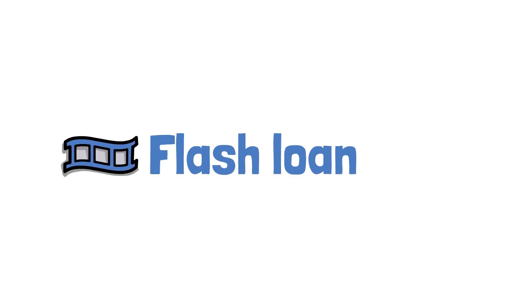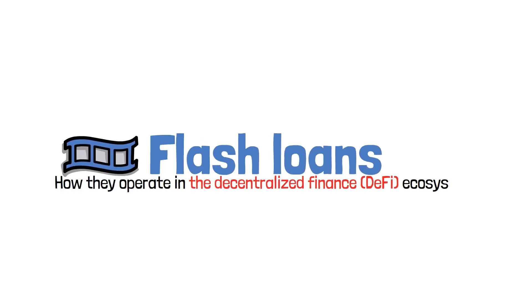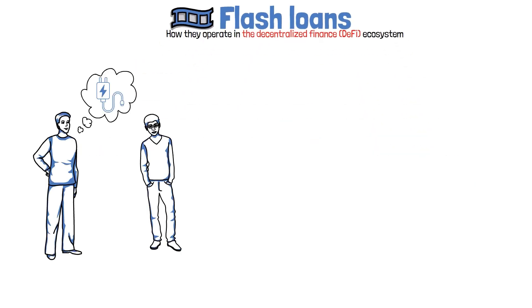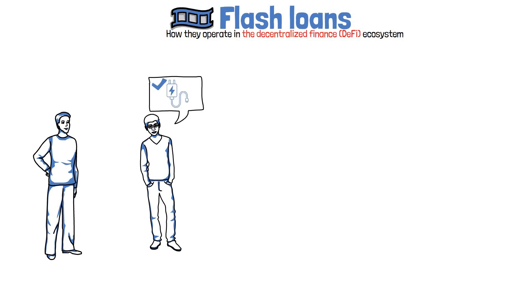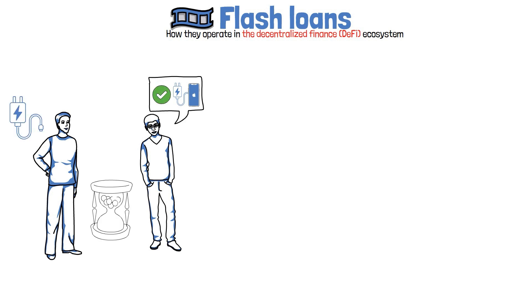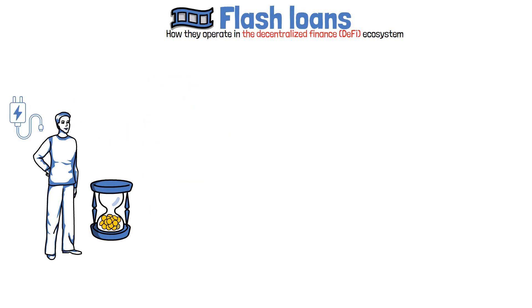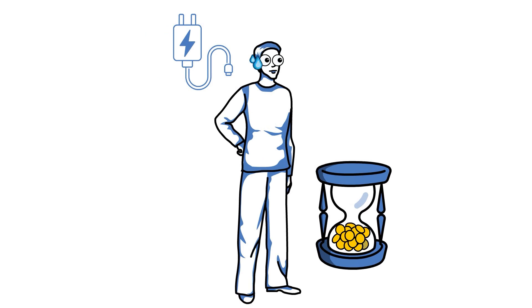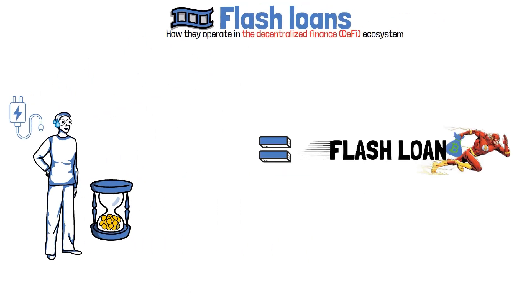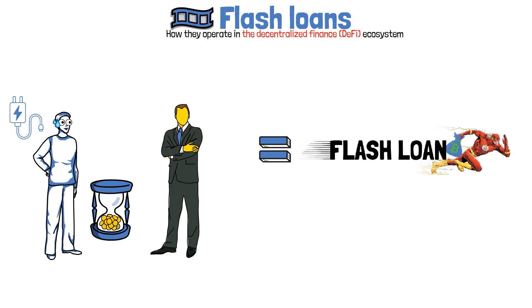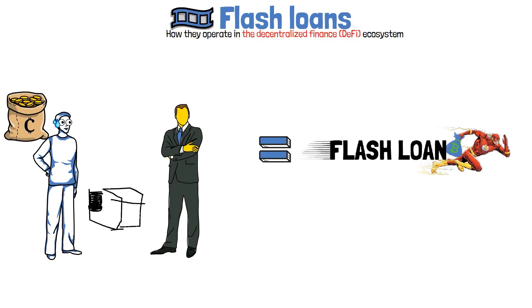In today's video, we will look into what are flash loans and how they operate in the decentralized finance ecosystem. Imagine that you want to borrow a phone charger from a friend. They agreed to give it to you, but there's a catch — your time charging your phone is limited. The friend instructs that you can charge your phone until the sand in the hourglass falls into another bulb. After the time runs out, you must return it to them. Otherwise, they will no longer be friends with you. This is essentially how flash loans work. If we replace your friend with a crypto lender, change the charger with cryptocurrencies, and replace the hourglass with the blockchain transaction block, we meet DeFi flash loans.